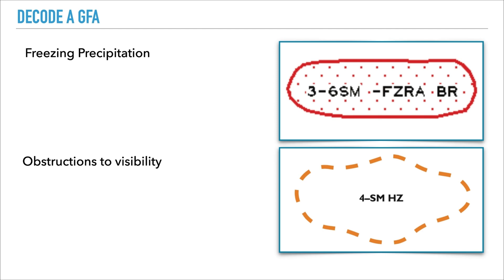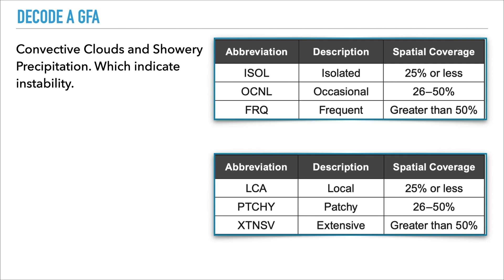This next section is quite important and is a common question on many exams. They'll ask what it means when you say isolated, occasional, or frequent. That has to do with convective clouds — in other words, showery precipitation. Isolated means the cloud group covers 25% or less, occasional is between 26 to 50%, and frequent is greater than 50%.